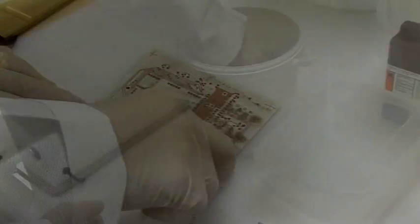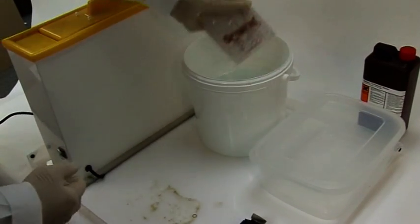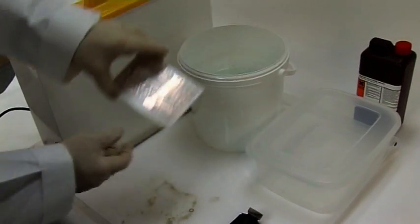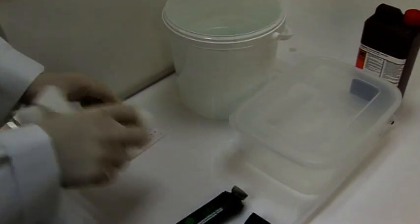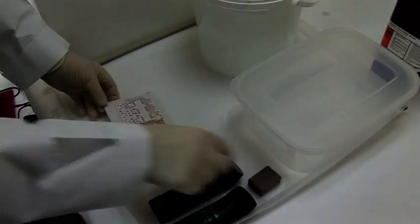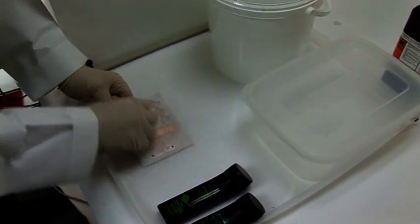After 20 to 30 seconds all the resist should have been stripped off, leaving the shiny copper pads and tracks. Wash the board thoroughly and then using the scrub block thoroughly clean the copper surface.